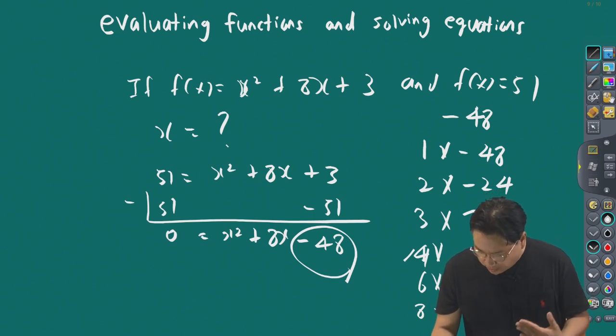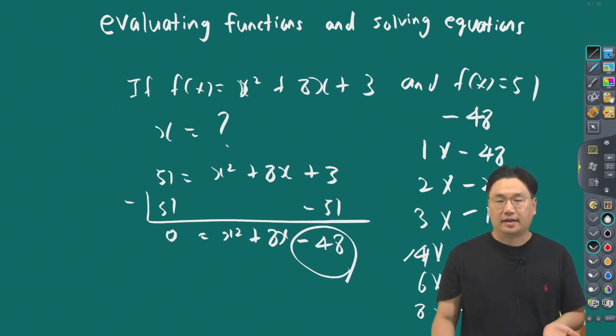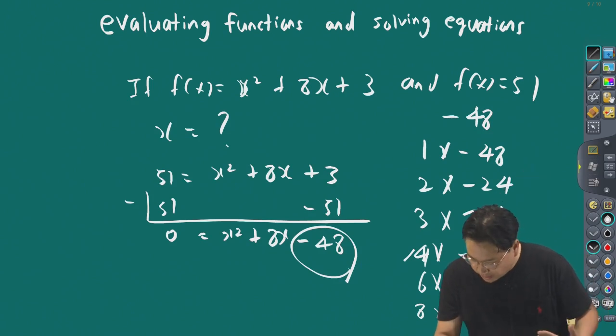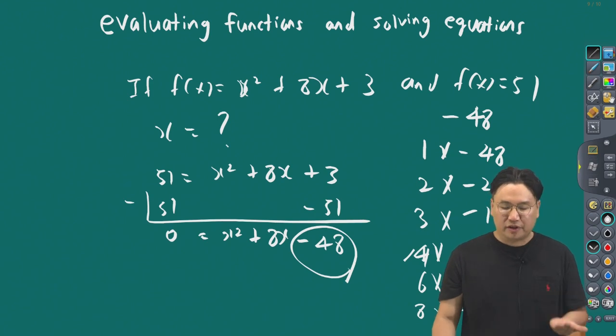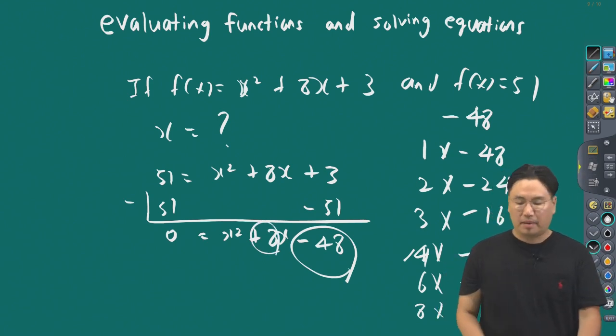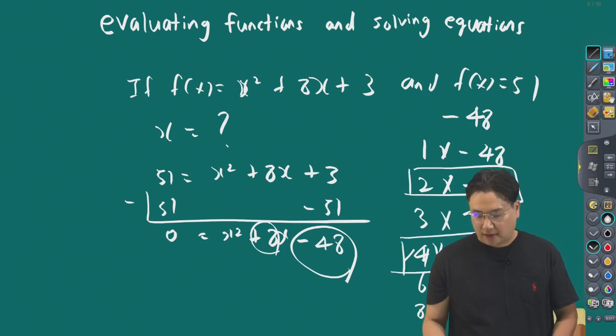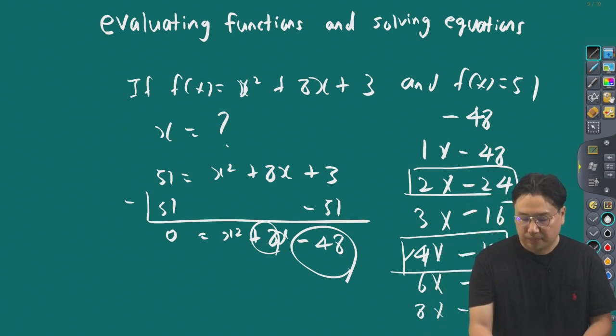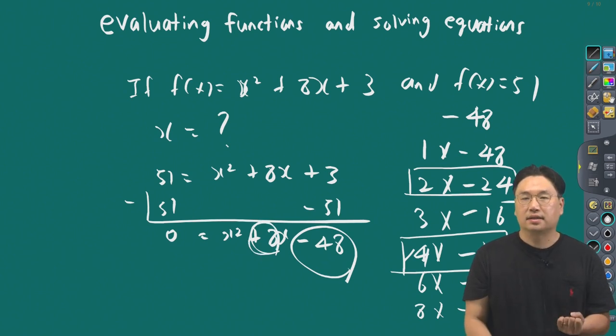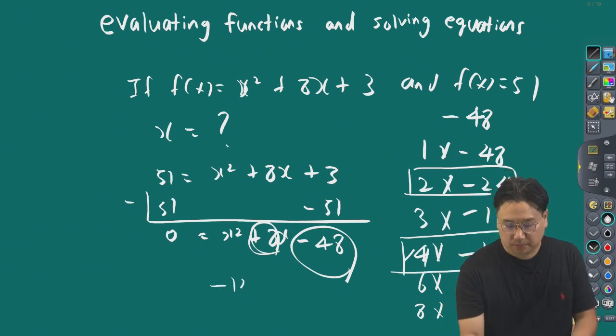Now we're going to use the zero product property. We need to find two numbers that multiply to negative 48 and at the same time add to the middle coefficient, which is plus 8. 2 times negative 24 is negative 48, but 4 times negative 12 is also negative 48. We need to add them to get the middle coefficient of plus 8. Minus 12 plus 4 is minus 8, so we need to reverse the sign.